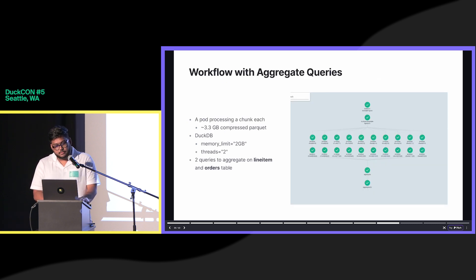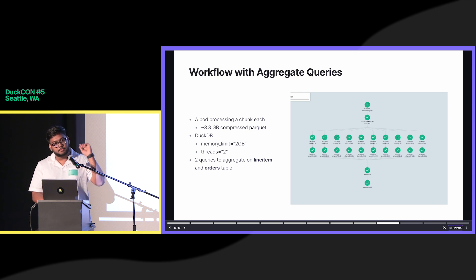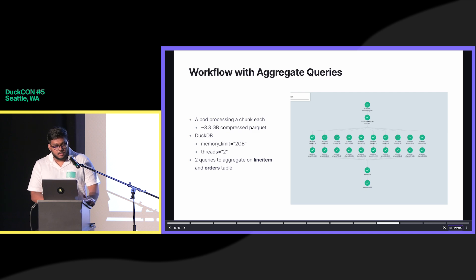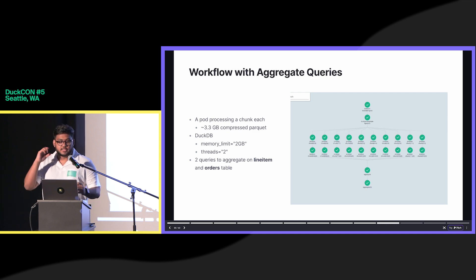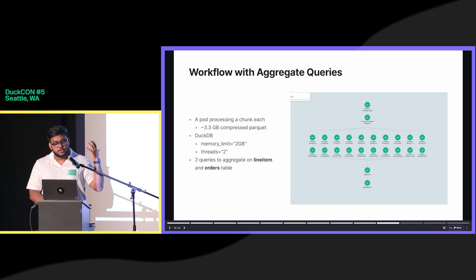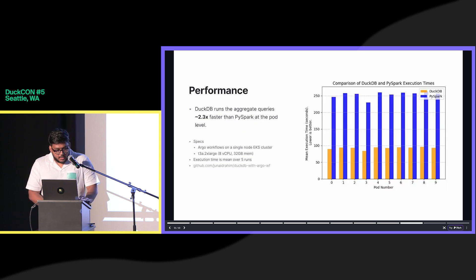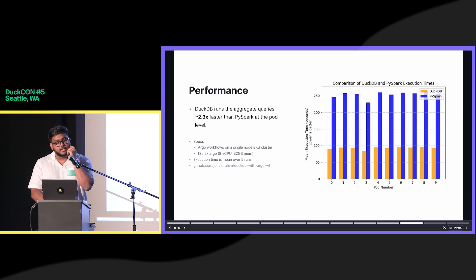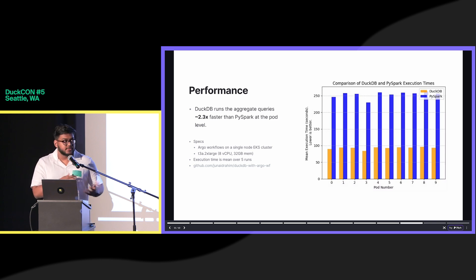We built a workflow which would look something like this: we hand off each Parquet chunk to a pod. Each chunk is around 3.3 GBs, and then with DuckDB's spill-to-disk features we can set memory limits and thread limits. We ran aggregate queries which are basically doing group-bys and sums over the line item and orders table. This is the performance we have seen in this example.